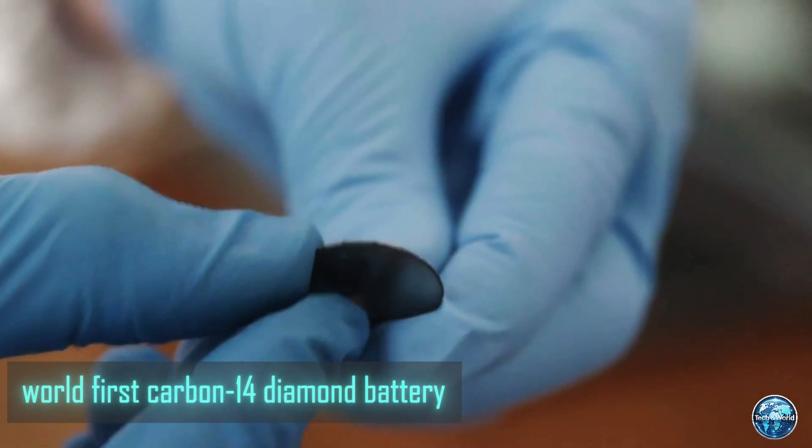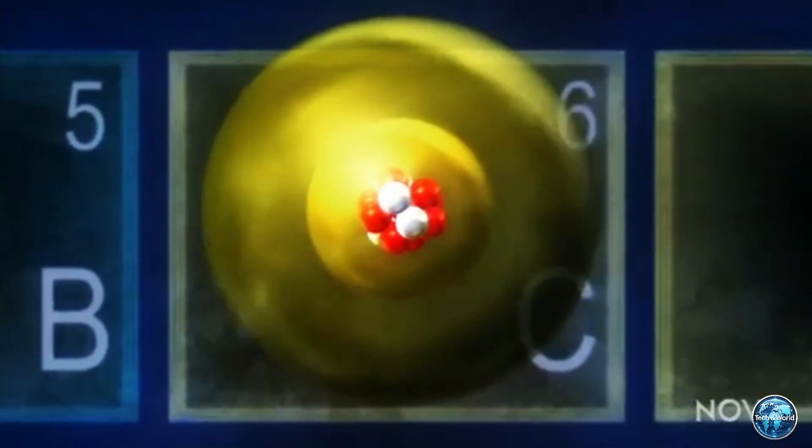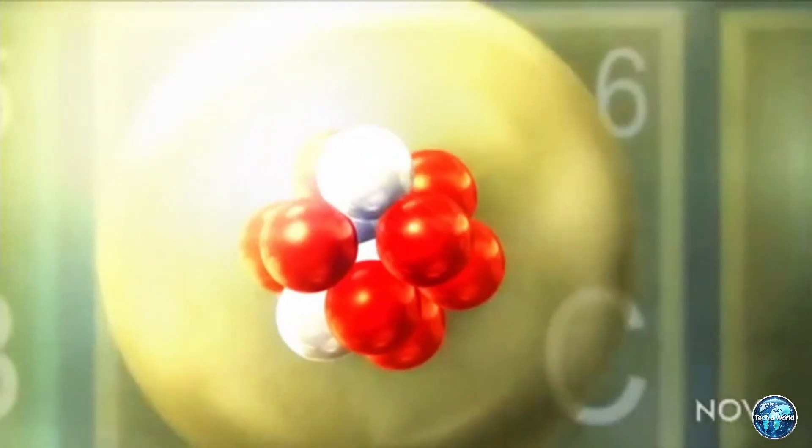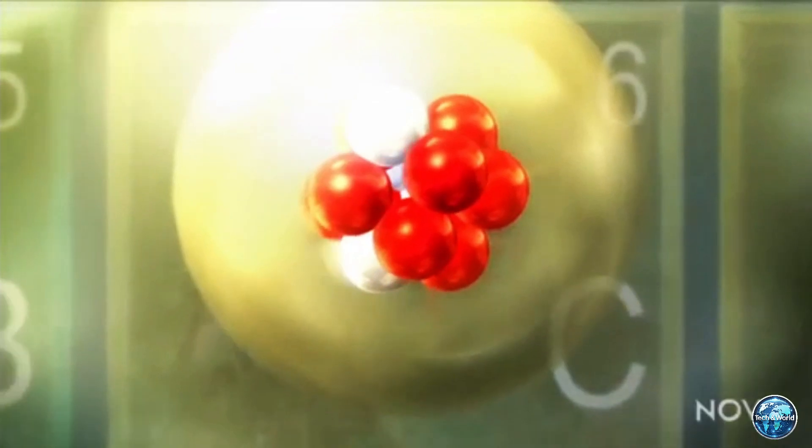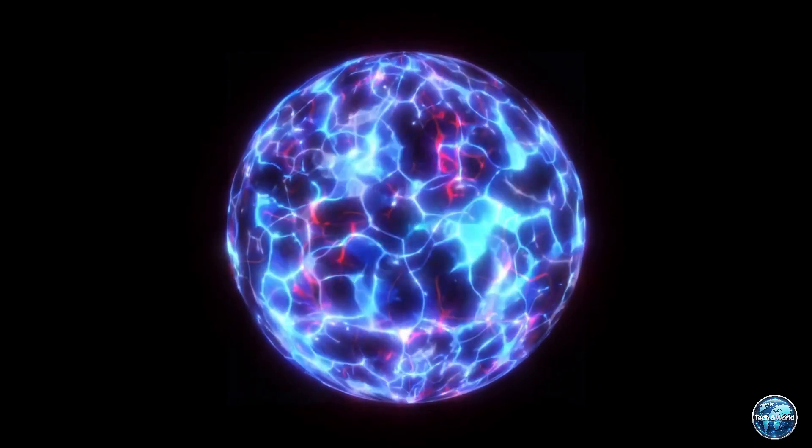Alright, let's start with what's a carbon-14 diamond battery. A carbon-14 diamond battery is a new type of power source that uses radioactive carbon-14 isotopes. These isotopes release energy as they decay,